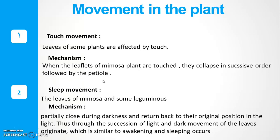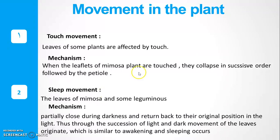Now, regarding movement in plants — plants have different types of movement. The first type is touch movement: you touch the leaves of a plant and they respond, like in the mimosa plant. When the leaves of the mimosa plant are touched, they collapse in successive order followed by pulvini. The second type is sleep movement, which is somewhat related to the touch movement. Sleep movement means the leaves partially close during darkness and return to their original position in the light — focus, partially closed, not totally.